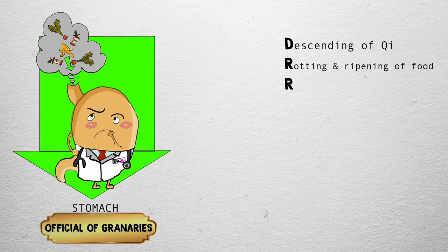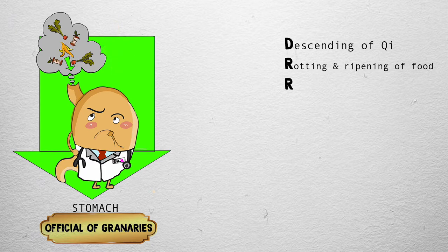When you think of a stomach, what do you think of? After eating a big meal, we let the stomach go to work and digest our food — in TCM terms, rotting and ripening. Notice how all the food is falling down into the stomach? This is because the stomach also has the function of receiving food. The stomach is Dr. R: descending, rotting and ripening, and receiving.